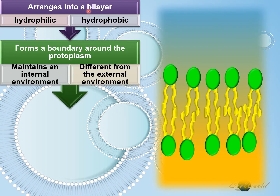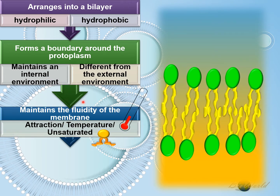Due to this bilayer, the second role of the phospholipid is to form a boundary around the cell protoplasm. In this way, the composition of the internal environment — that is the cytoplasm — can be maintained to be different from the composition of the external environment. The third role of the phospholipids is that they can help to maintain the fluidity of the membrane. As discussed earlier, fluidity can be influenced by the weak hydrophobic attraction between the phospholipid molecules, change in temperature, as well as the composition of fatty acids in the phospholipid bilayer.